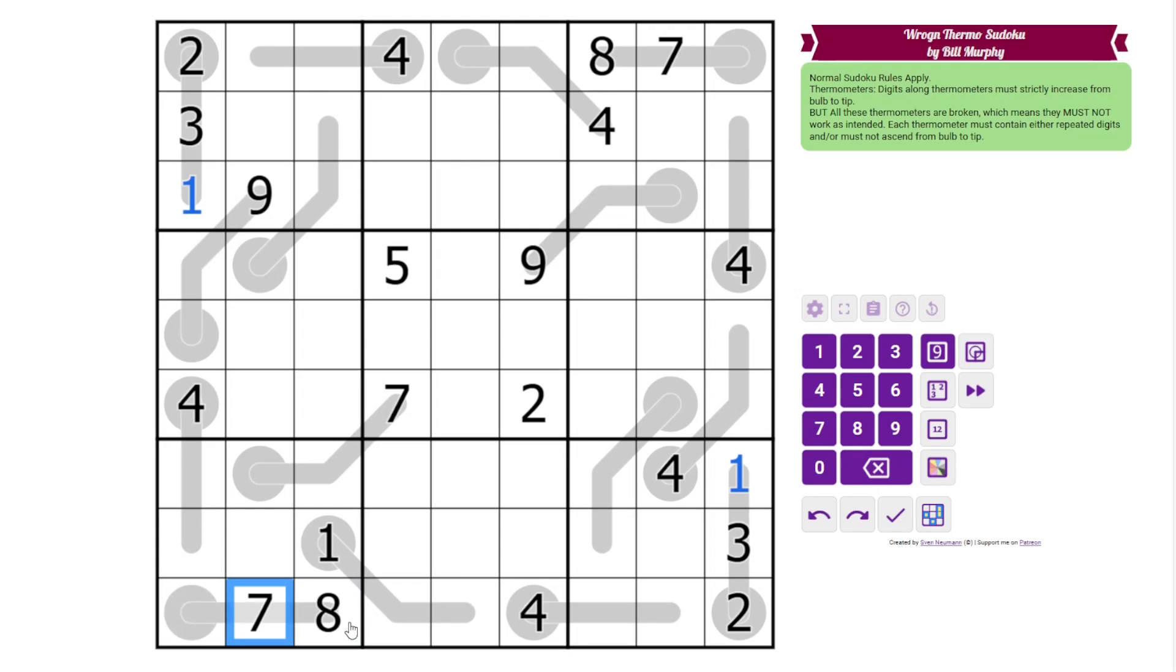Here, we have something 7, 8. If this were less than 7, this would be a valid thermo. So it must be greater than 7. The only digit we can have is 9, and this is also 9. All right, here, we have a 1 here.